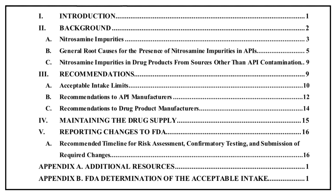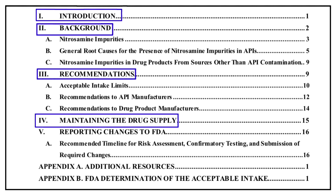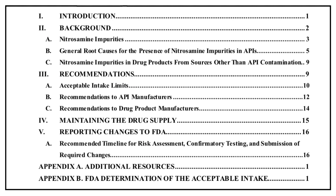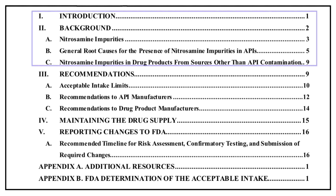This guideline has been divided into five parts: the first part is Introduction, the second is Background, the third is Recommendations, the fourth is Maintaining the Drug Supply, and the fifth and last part is Reporting Changes to FDA. In today's video, we will focus on the initial two parts — Introduction and Background.